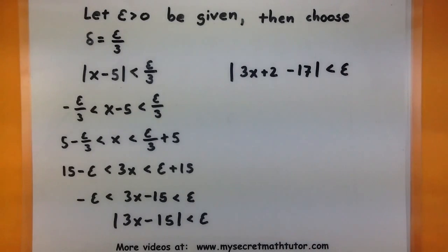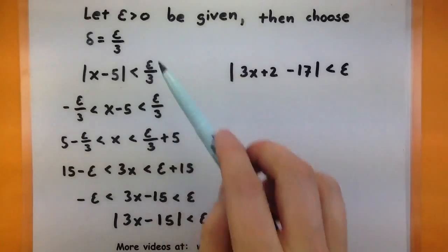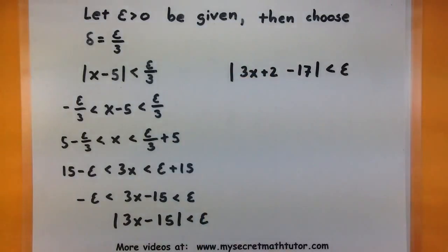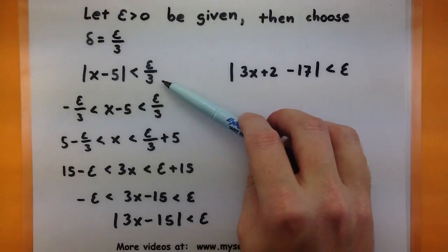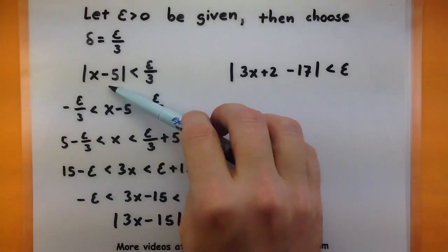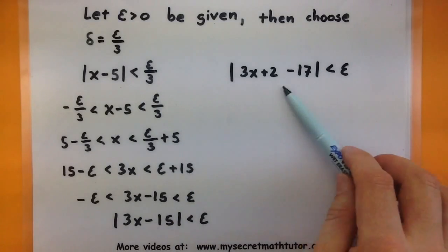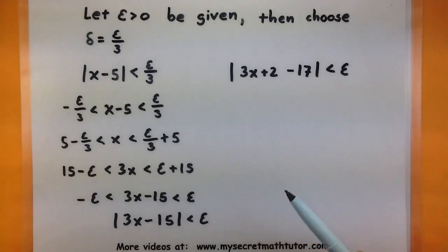So that was 3x plus 2 minus a 17 less than epsilon. So this basically shows that if someone runs along and gives me an epsilon, then I know exactly how to choose my delta. I'll choose it to be epsilon over 3. And that when I make that choice, that if I'm within that threshold for x's as I get close to 5, that this will basically force my function to be within epsilon of 17.